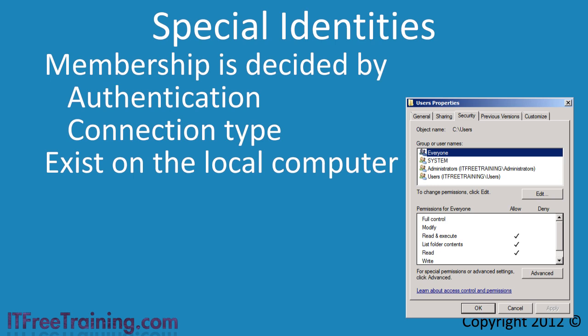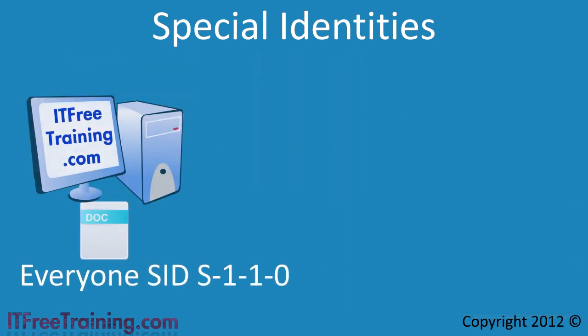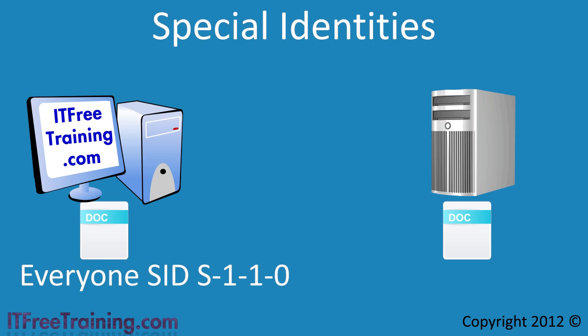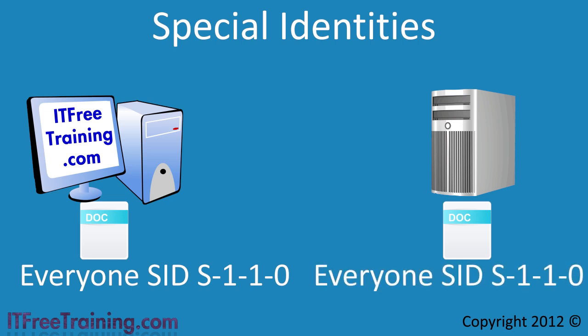If you have copied files between different computers, the permissions for these files are also copied. The question arises: how can this occur if special identities are local to the computer only? The way Windows allows permissions to be preserved when copying between different systems is that special identities always have the same SID. As shown here, the SID for the everyone special identity is S-1-1-0. Regardless of whether you copy the files to a workstation or server, Windows knows that this SID is always the everyone special identity.